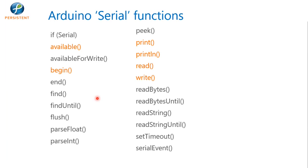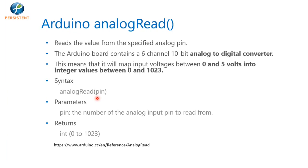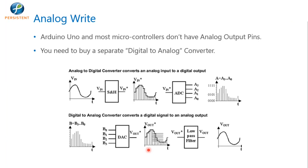Arduino also has analog signal support. There are six analog pins A0 to A5. The analogRead method reads the value from a specified analog pin. The Arduino board contains 6 channels with a 10-bit analog-to-digital converter — this means it maps input voltage between 0 to 5V into integer values between 0 to 1023. The syntax is analogRead(pin_number), returning a value in the range 0 to 1023. There is a reference link at the Arduino site for more detail on analogRead.